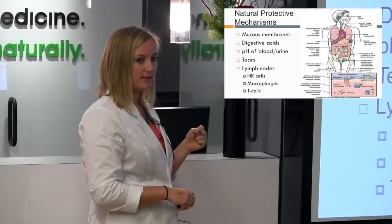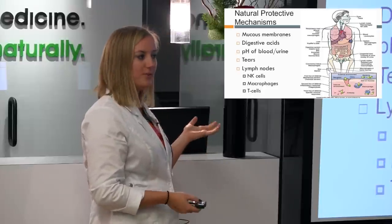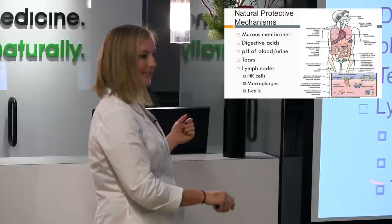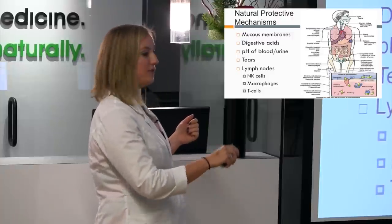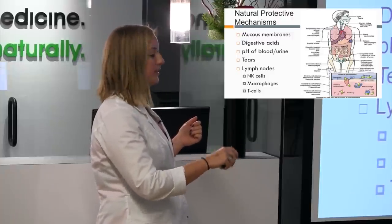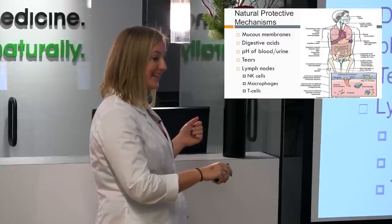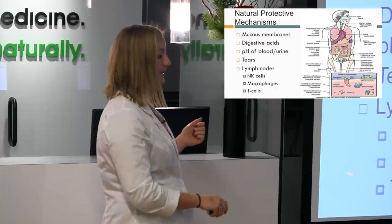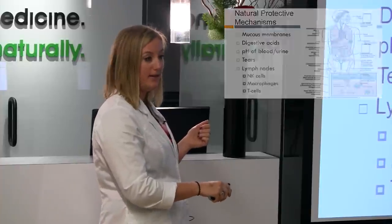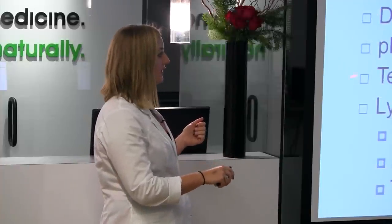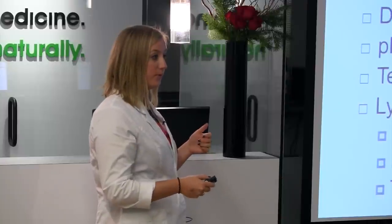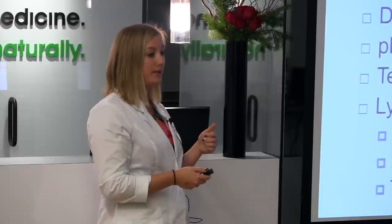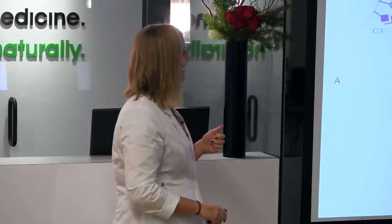All of this stuff needs to be kept healthy in order for us to have a healthy immune system. It's not just about vitamin C and keeping these cells healthy — you have to maintain all of these other things in order to have a really robust immune system.